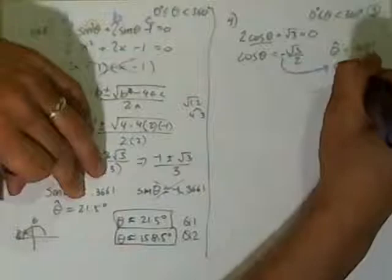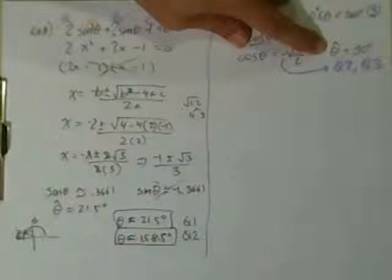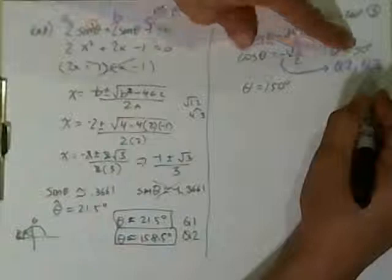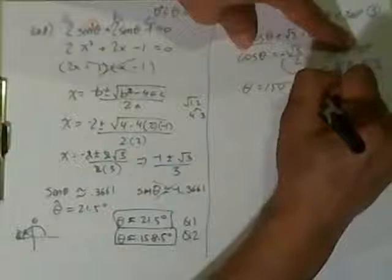So since I found the reference angle, what I'm going to do is in quadrant 2, I'm going to subtract it from 180. So theta is equal to 150 degrees. In quadrant 3, I'm going to add this 30 degrees. It's going to be 180 plus 30. It's going to be 210 degrees.